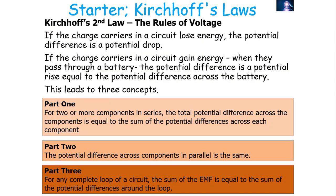Just to clarify before we move on to focusing on potential dividers: what are the three parts of Kirchhoff's second law? Part one: for two or more components in series, the total potential difference across the components is equal to the sum of the potential differences across each component. Part two: the potential difference across a component in parallel will be the same. And part three: for any complete loop, the sum of EMFs into the circuit equals the sum of potential differences out of the circuit.